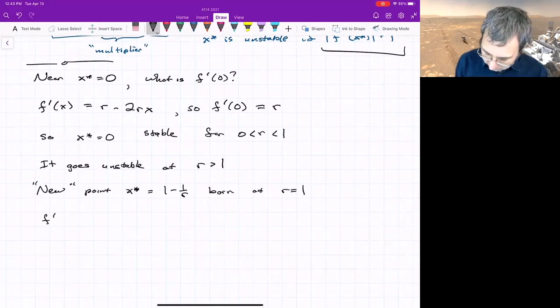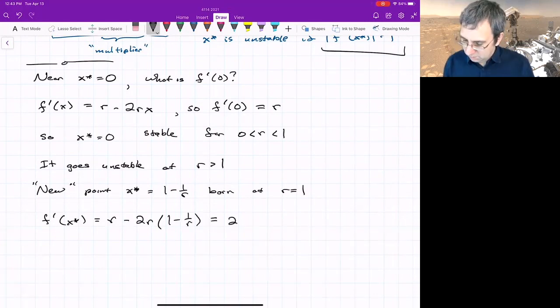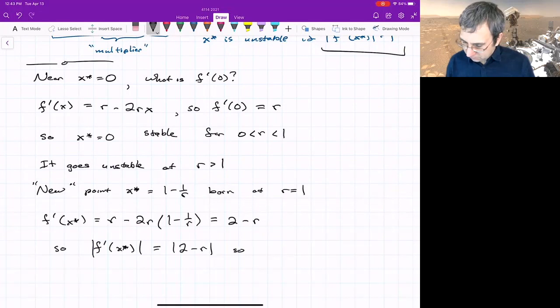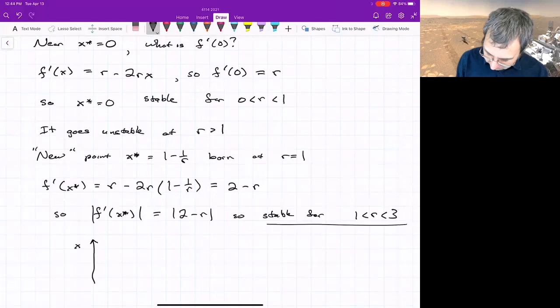We can figure out its stability. f' of this new fixed point that's not zero is r - 2r*(1 - 1/r), which equals 2 - r. So that new point, the magnitude is |2 - r|, so it's stable for r greater than 1, less than 3.